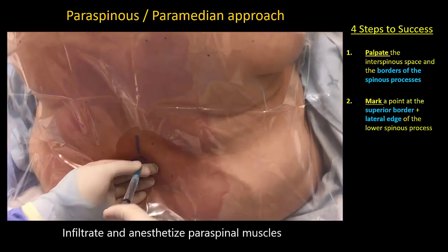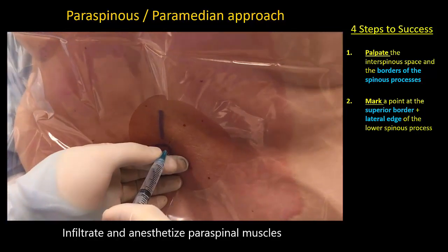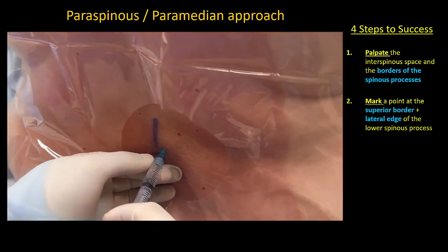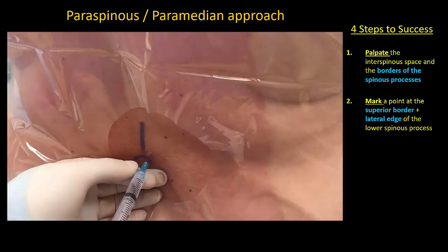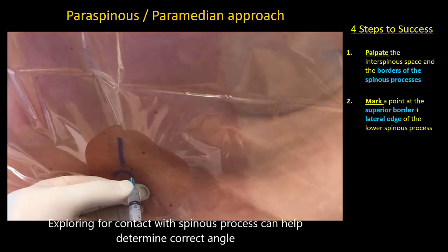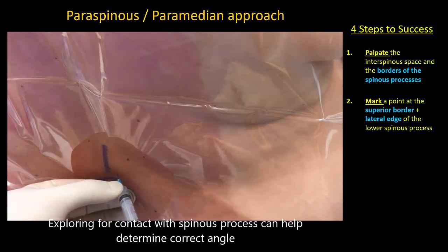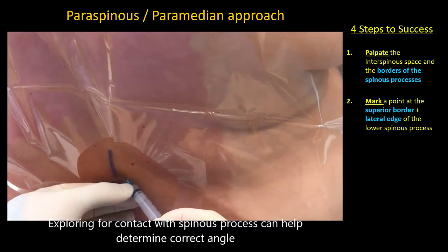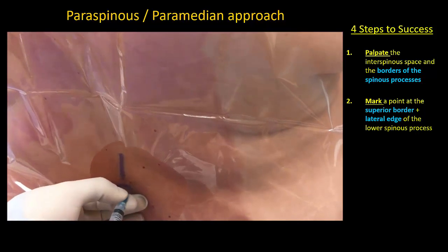Infiltrate the skin and the underlying paraspinal muscle. I recommend exploring the contours of the spinous process with the local infiltration needle to further confirm the best trajectory.